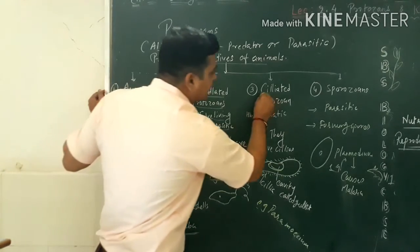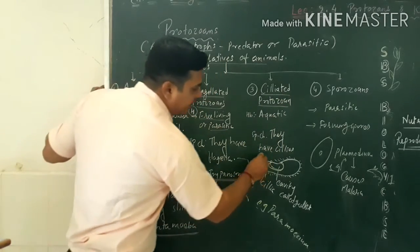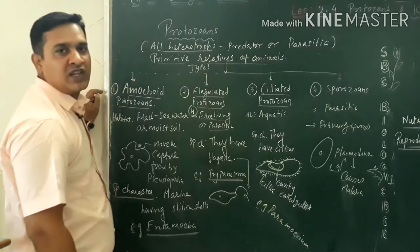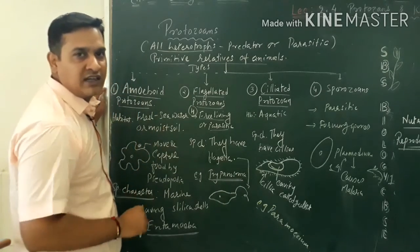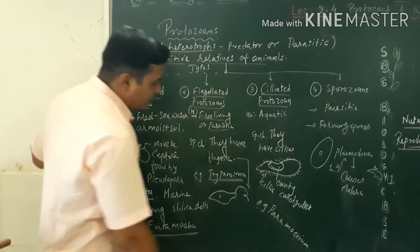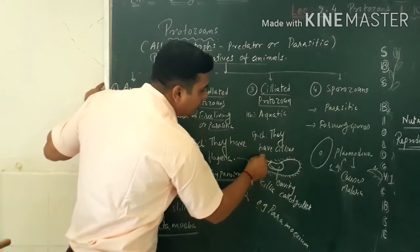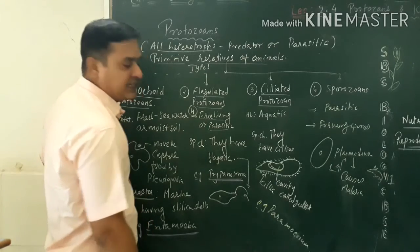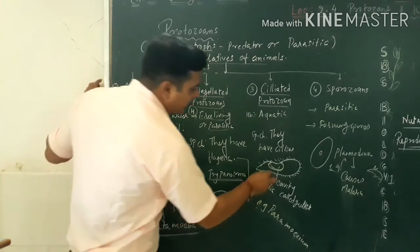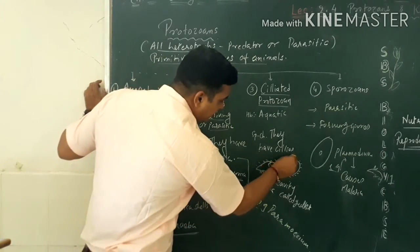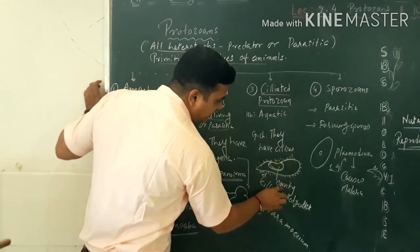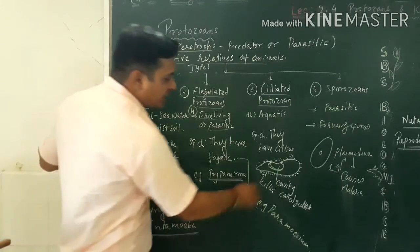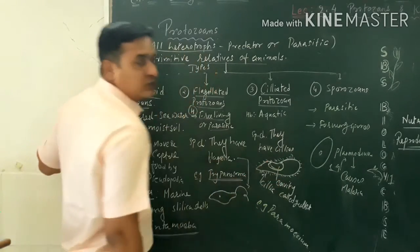Third group is the ciliated protozoans. They have thousands of cilia on their body surface. Flagella and cilia both are structurally similar, you already know. Here, the whole body can be covered by tiny projections called cilia. Cilia helps to locomote also. And by the spinning of cilia, the food can be transferred up to the cavity and this cavity is called gullet. This gullet can be opened outside the body.